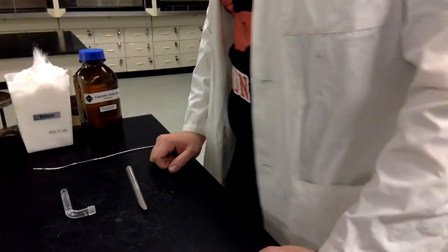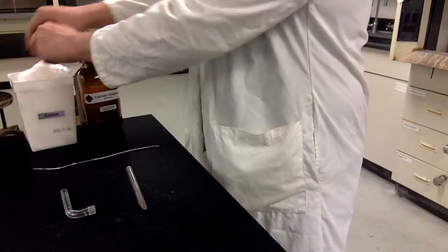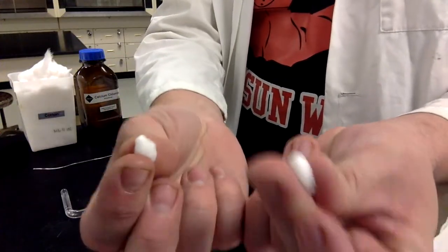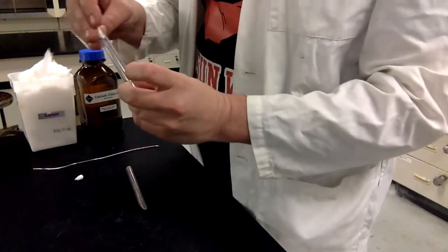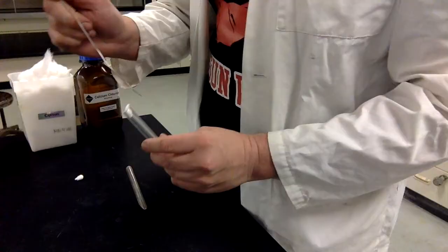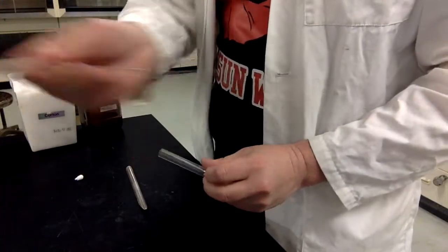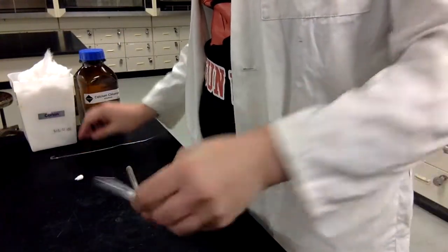When you're making your drying tube, what you want to do is grab yourself a few little pieces of cotton, roll them up into little balls just like that. Grab the first one, put it in, just like you're making a cannon, just go ahead and shove it in there. Using a little metal rod, you're going to put it about that far in.